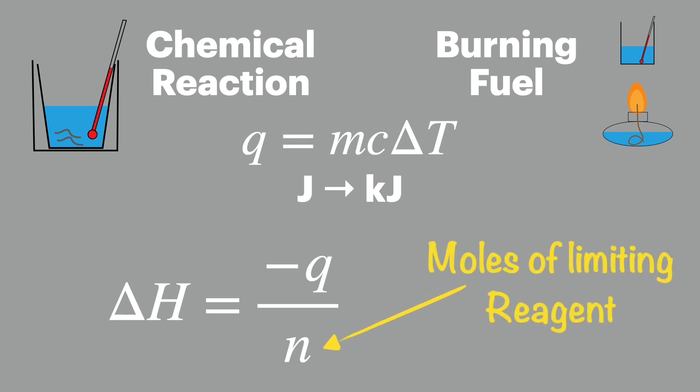N here is the number of moles of the limiting reagent in the chemical reaction, or if we're burning the fuels, it's the moles of fuel burnt.